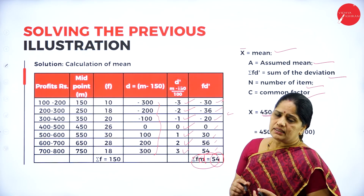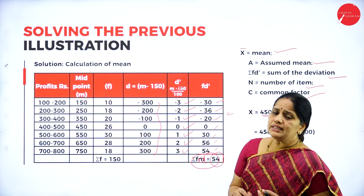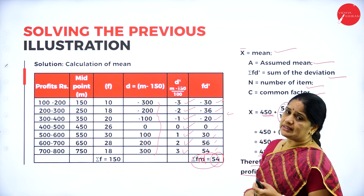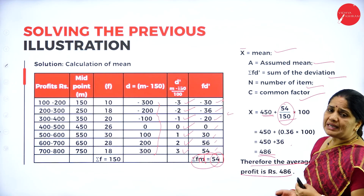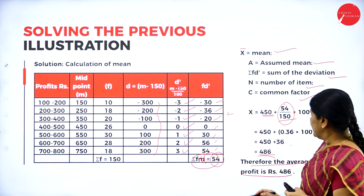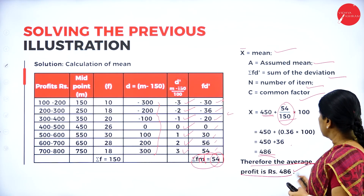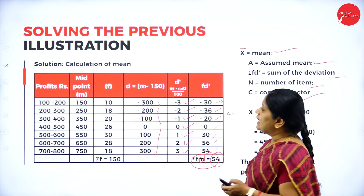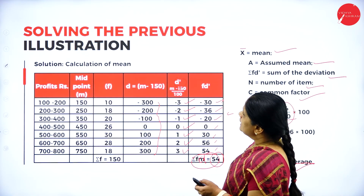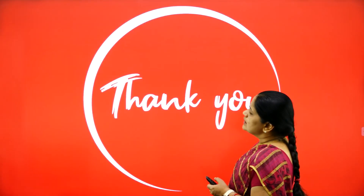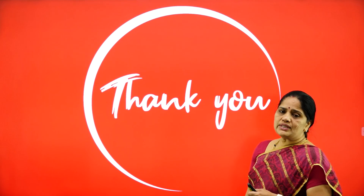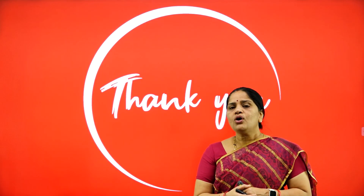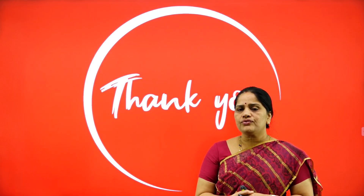The average profit of 486 has been calculated by three methods: the direct method, the deviation method, and the step deviation method. Whatever method we use, the average profit is always 486. With this we come to the end of this session. Hope you have all followed it, thank you.